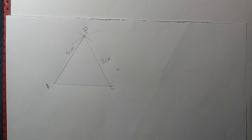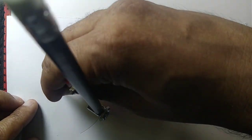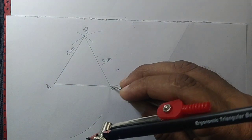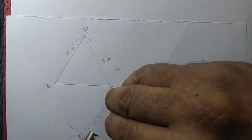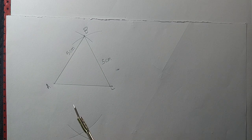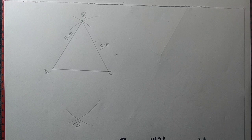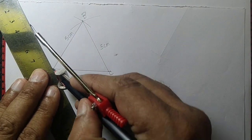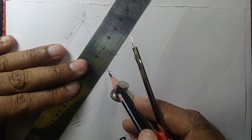Next, from point A we draw an arc with radius equal to 5 centimeters, and from point C we draw another arc with radius also equal to 5 centimeters. Let those two arcs intersect at point D. We then join AD and DC.